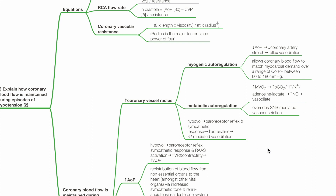Metabolic autoregulation occurs when there is increased myocardial oxygen consumption, leading to increased PCO2, hydrogen ions, potassium ions, adenosine and lactate production, which leads to increased nitric oxide secretion and vessel dilation. This overrides sympathetic-mediated vessel constriction.